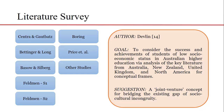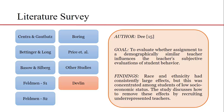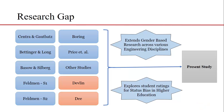Now let's proceed towards the studies of socioeconomic diversity. In order to consider the success and achievements of students of low socioeconomic status in Australian higher education, Devlin suggested a joint venture concept for bridging the existing gap of socio-cultural incongruity. Another study analyzed 8th grade students through NELS 88 survey data and found that race and ethnicity had consistently large effects, concentrated among students of low socioeconomic status. The study further discussed how to remove these effects by recruiting underrepresented teachers. And now, the research gaps.